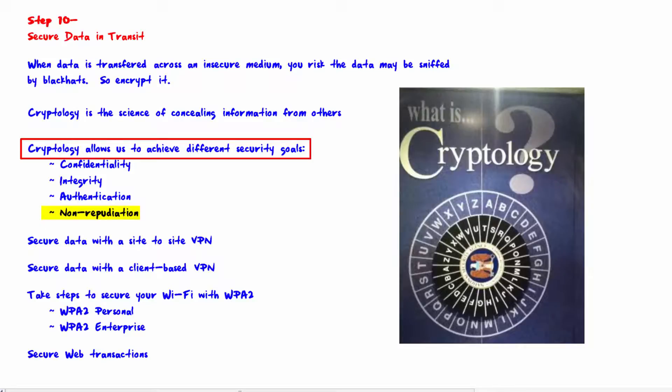Non-repudiation is probably the least intuitive, so here's an example: suppose a person sends an email to buy a stock, and then an hour later that stock tanks. That person might say they never sent the email to buy it. Non-repudiation means it can be proved that they actually did send that order to buy that stock.